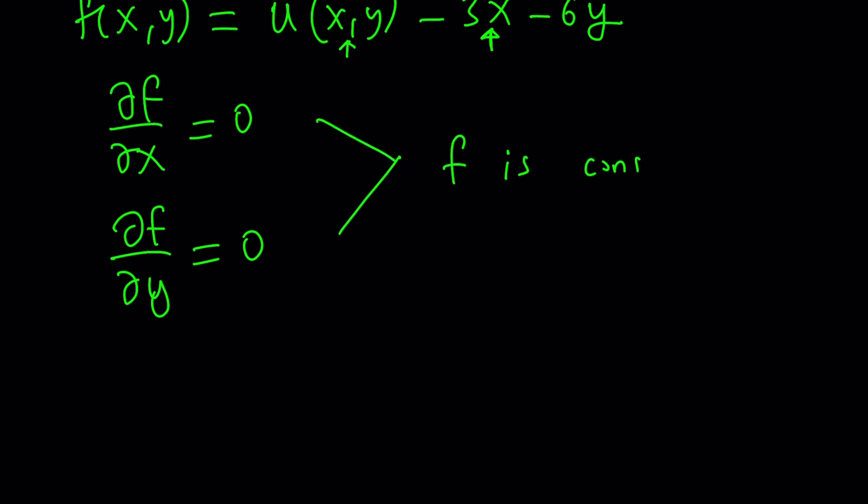Because it doesn't contain neither of those variables. So now, we know that f is a constant. What can we do with this? Well, we can write this f as f(x,y) as a constant, which is c in this case.